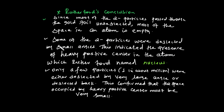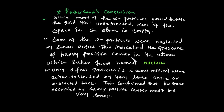Some of the alpha particles were deflected by small angles, and some were deflected by large angles. This indicated the presence of a heavy positive center in the atom. Since alpha particles are positively charged and the center is also positively charged, they repel each other — causing the deflections.